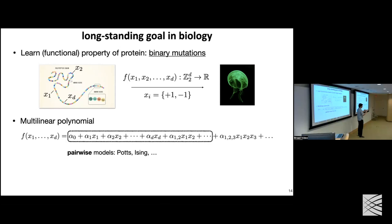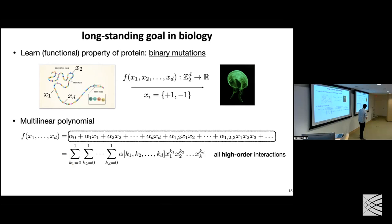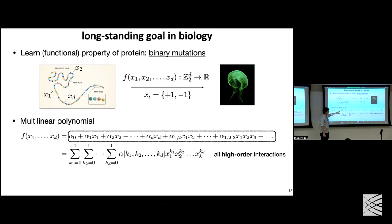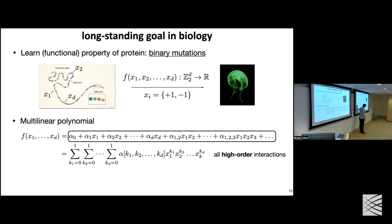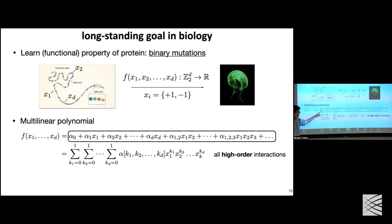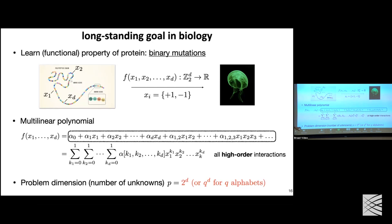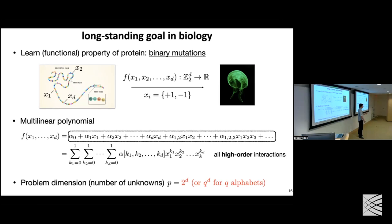But this is too simplistic. Any complex function can have higher-order interactions — third order, fourth order, maybe higher. The question becomes: why can't statistical physics handle polynomials with all these higher-order interactions? Looking at the expression, the total number of unknowns — the number of alpha coefficients — is exactly 2^d, because each monomial is either active or not. So we have 2^d many unknowns to estimate.